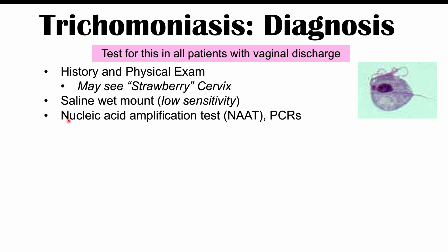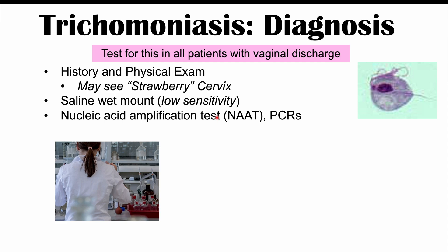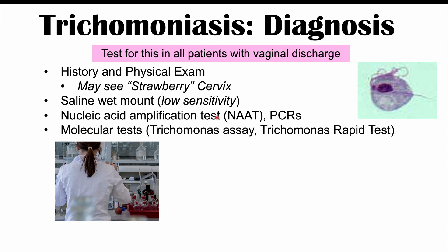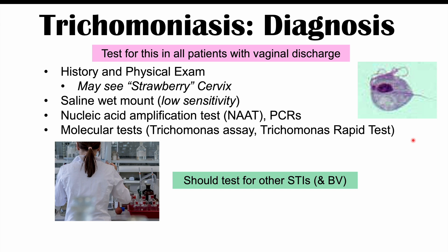Newer diagnostic methods include nucleic acid amplification tests (NAATs) or PCR, which substantially increase sensitivity, as well as molecular tests such as trichomonas assays and rapid tests. Because of the high rate of co-occurrence with other STIs, it's important to also test for chlamydia, gonorrhea, and bacterial vaginosis.